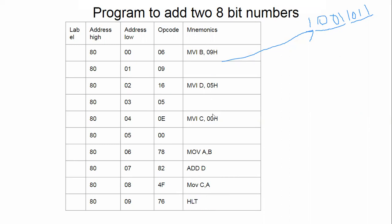Wherever the user provides input data or a memory address, the instruction takes more bytes. When a memory address is placed in the instruction, the address itself is 16 bits, plus the opcode — so it is a 3-byte instruction total. We'll see that in detail shortly.